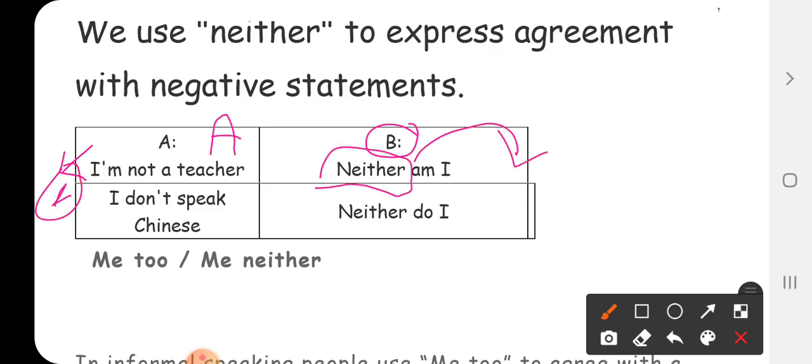A said I am not a teacher. B, if it's negative, neither am I. We put it neither then cross not and I. Okay, then neither, instead of not, okay?